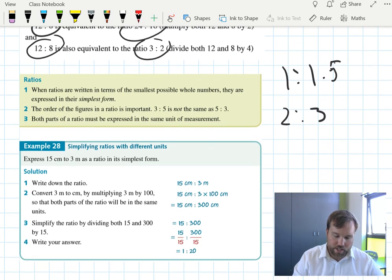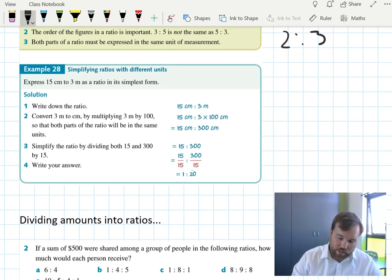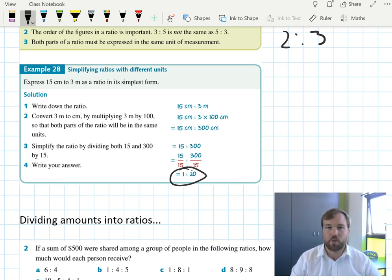For example, express 15cm to 3m as a ratio in its simplest form. Well, we wouldn't just write 15 to 3. We've got to remember the units are important. 15cm to 3m, we convert both into cm and then what happens is it makes it unitless and then we can simplify by dividing both sides by the same number. Note that when there is a 1 on the left hand side, it is called a unit ratio. And we use unit ratios quite a lot as 1 to something else.